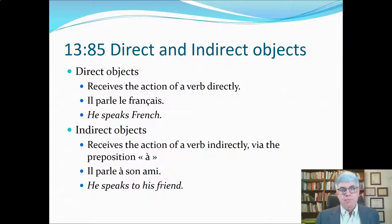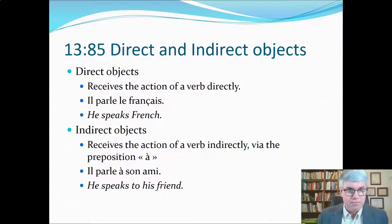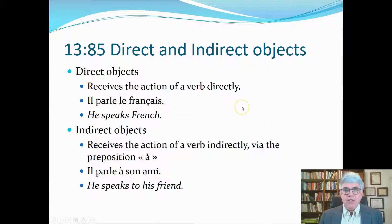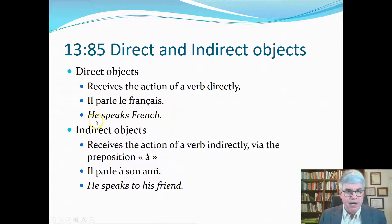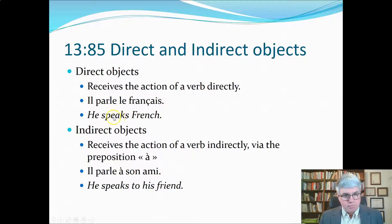Let's review by looking at what direct and indirect objects are in English first. Direct objects receive the action of the verb directly. For example, 'il parle le français' — he speaks French. There's no preposition in French or English between 'speaks' and 'French,' so French is the direct object of the verb.